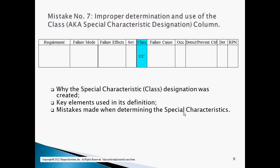The seventh mistake a company can make is improper use of the class column. The class column, or special characteristic designation, was created to identify issues that expose the company to unacceptable safety and/or financial risk. Any line of the process FMEA with a class symbol, assuming it has been properly determined, must be worked on. The two key components used to determine whether the class symbol is warranted are the severity of the effects and the expected probability of the issue occurring. The biggest mistake is when design engineers with limited knowledge of process capability are allowed to specify which characteristics receive class symbols based on severity alone, without considering the capability of the process.